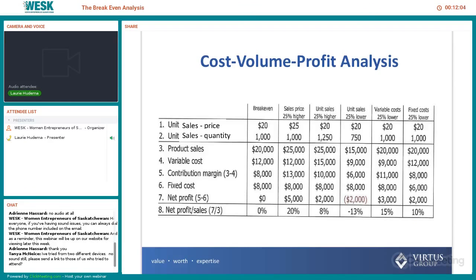The second-from-last example: our variable costs go 25% lower. So instead of $12 per unit, it goes to $9 per unit, and our profitability goes up by $3,000. Then the last example looks at fixed costs 25% lower — so instead of $8,000 in fixed costs, we've got $6,000 of fixed costs. You can see what will happen and run those scenarios depending on what you think might happen in certain months or going forward if you make some sort of change, like advertising to increase the number of customers.